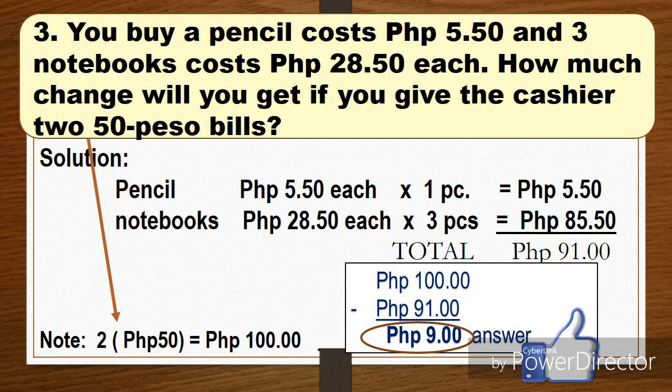And then we'll add. 5 pesos and 50 centavos plus 85 pesos and 50 centavos equals 91 pesos. So that's what you spent. Okay, so the money you gave the cashier is 100. We'll subtract what you spent, which is 91 pesos. So 100 minus 91 pesos equals 9 pesos. So that's your change from the cashier.